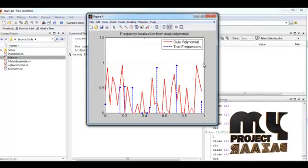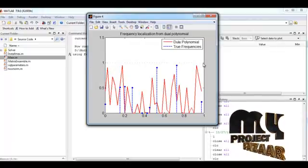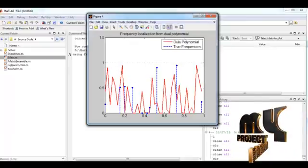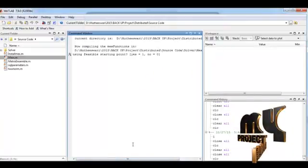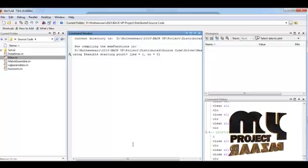Using feasibility starting point, press 1 or 0. If you press 1 then the starting point will be considered.